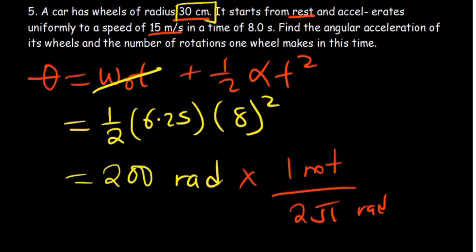So we just divide 2π into the 200. So 200 divided by 2π gives us 31.8 rotations.